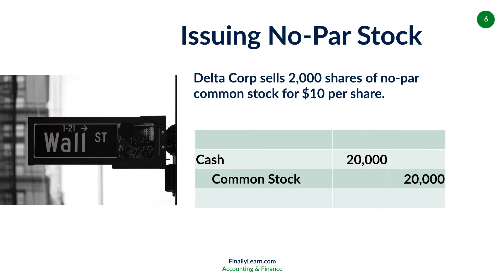What if the stock has no par value — zero par value or whatever, there's no par value assigned? Then we're going to debit cash of $20,000 and credit common stock of $20,000. If you ever start a corporation and have a chance to say you want no par common stock, it makes the journal entry a little bit easier. So cash and common stock: cash goes up $20,000, common stock, which is equity, goes up $20,000.